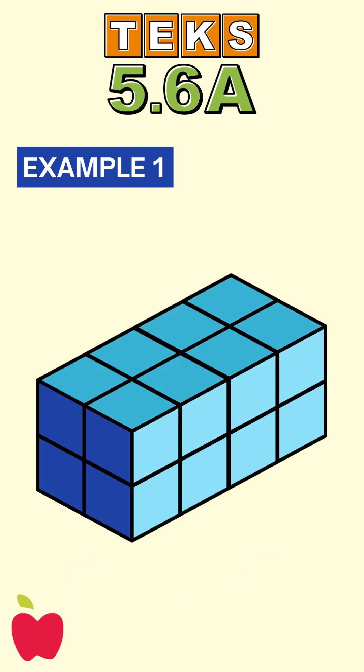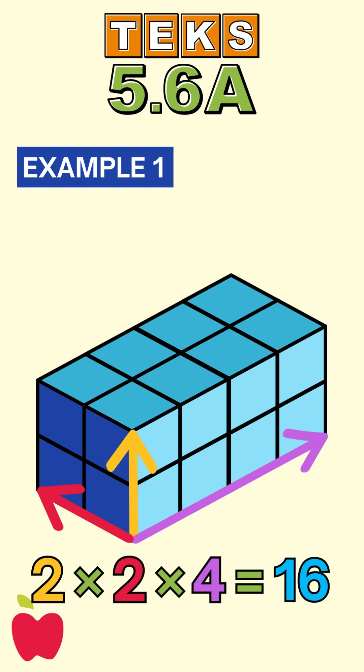Another method is to multiply the three dimensions of the prism directly. Two times two times four equals 16 cubic units. So it takes 16 unit cubes to completely fill the prism, with no gaps or overlaps.